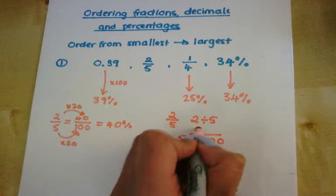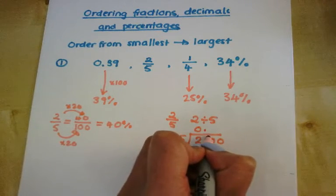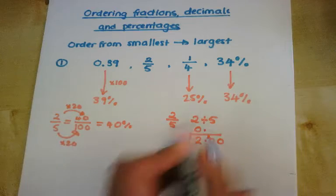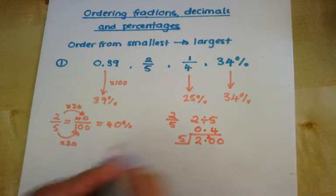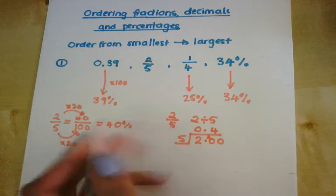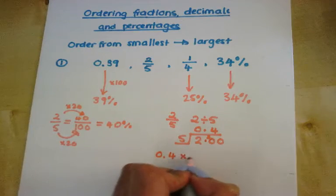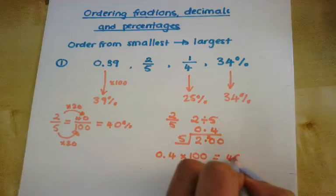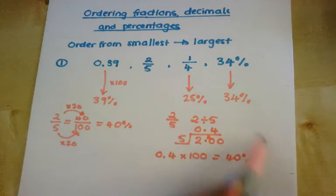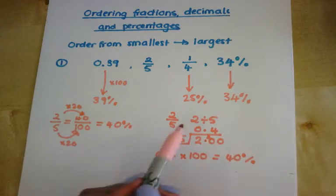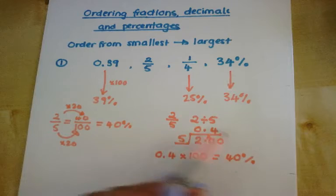So 5 doesn't go into 2. Carry the 2. 5 into 20 is 4, so it's 0.4. So 2 fifths as a decimal is 0.4. And then to change 0.4 into a percentage, I'm going to times by 100, which is 40%. So this is another way to change a fraction into a percentage, by changing it into a decimal first, by using the bus stop method.